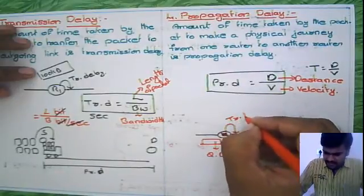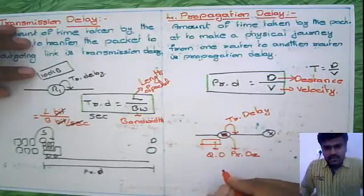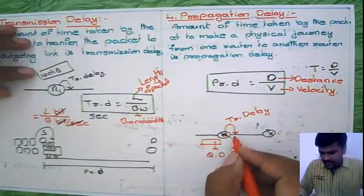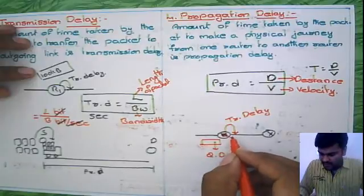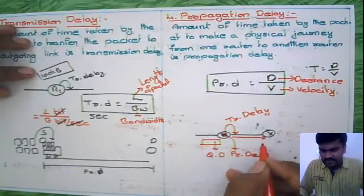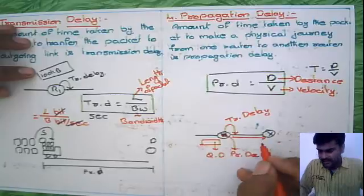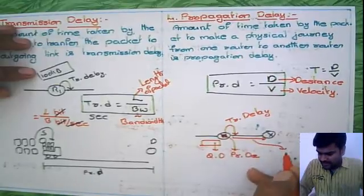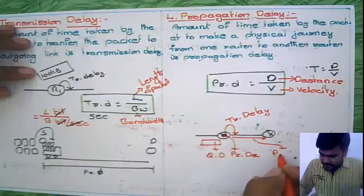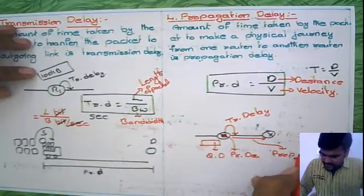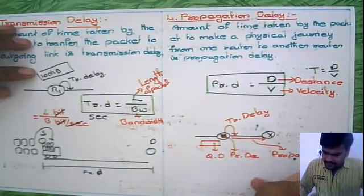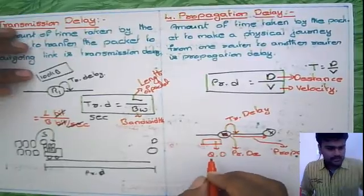After transmitting that data into the outgoing link, it has to propagate to the next router or to the destination. This we are calling as propagation delay.